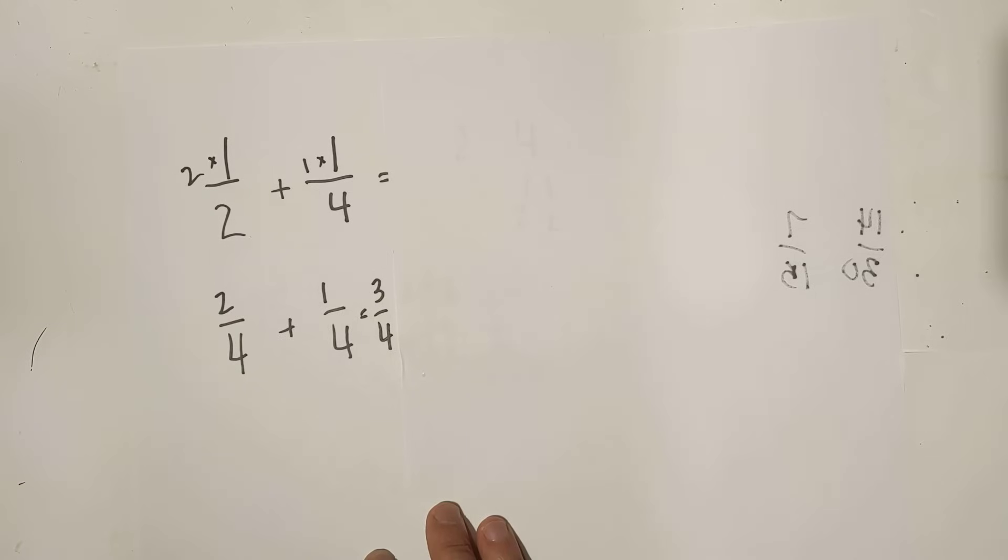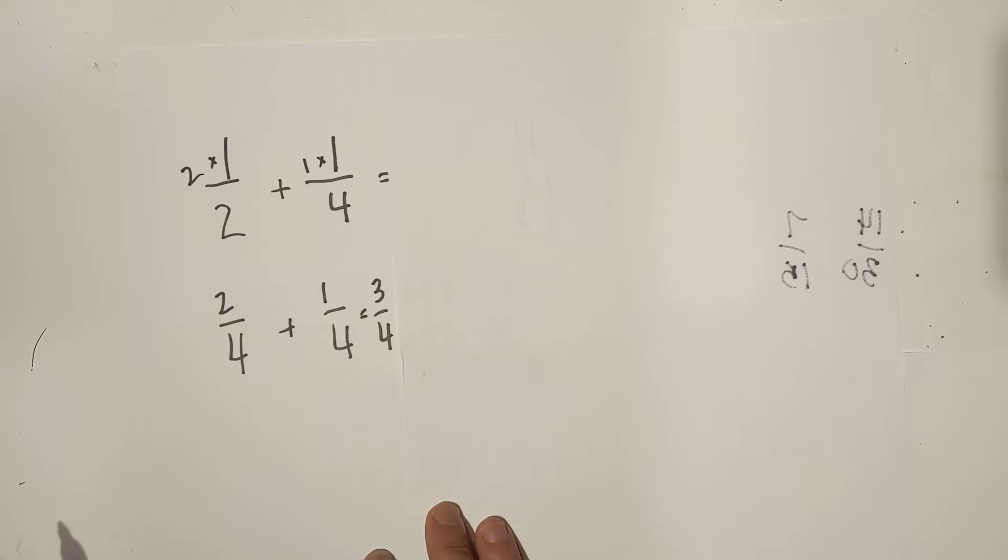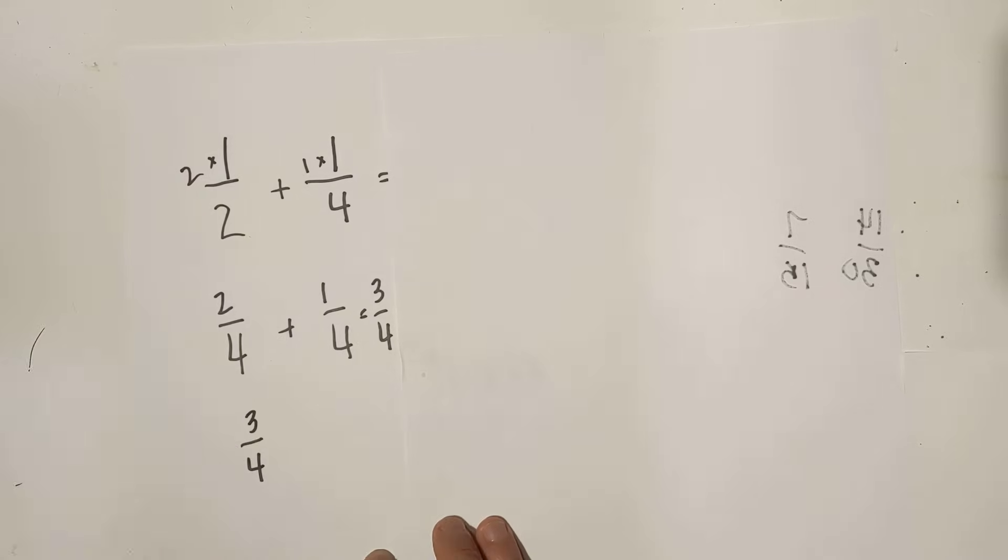Bring over the common denominator. I know that three is prime, so it is simplified. So one-half plus one-fourth is three-fourths.